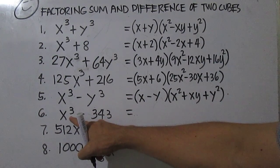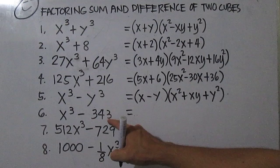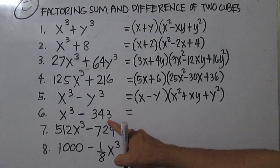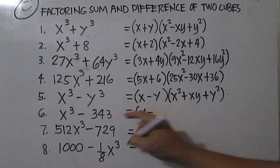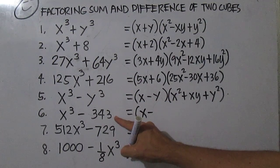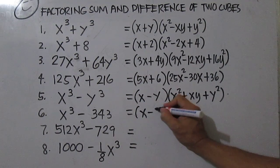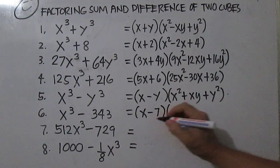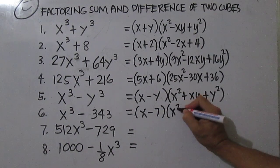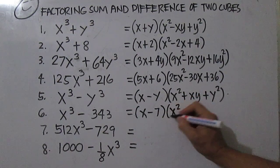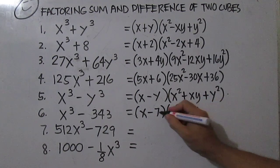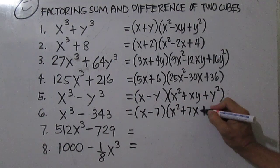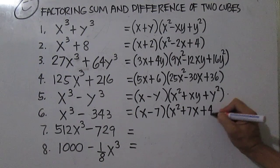This is x cubed minus 343. Since 343 is 7 cubed, the cube root of x cubed is x, minus the cube root of 343 which is 7. From this factor, you square the first term, then write the opposite of the product of the first and second term, then square the second term.